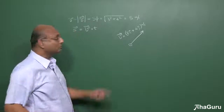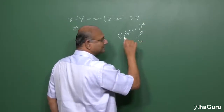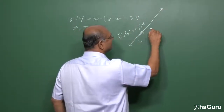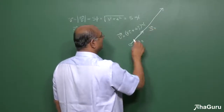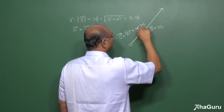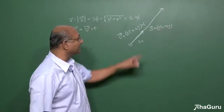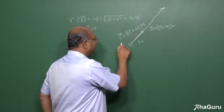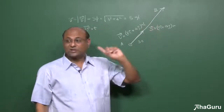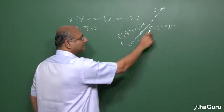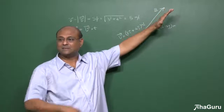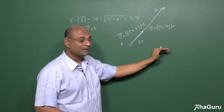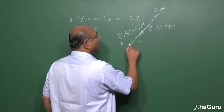Velocity into time gives displacement. Suppose this object was moving for 3 seconds — what would be the displacement? S-vector is velocity vector times 3: that gives 9i-cap plus 12j-cap meters. The object moves 9 meters in the x-direction and 12 meters in the y-direction. That displacement vector takes us from point A to point B.